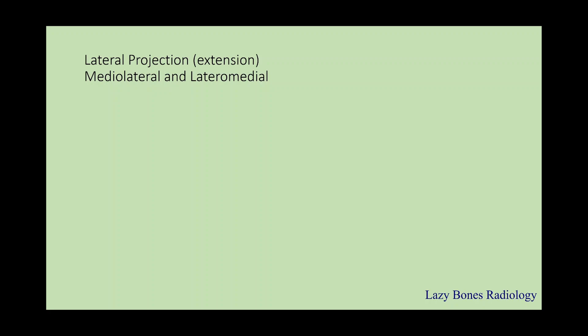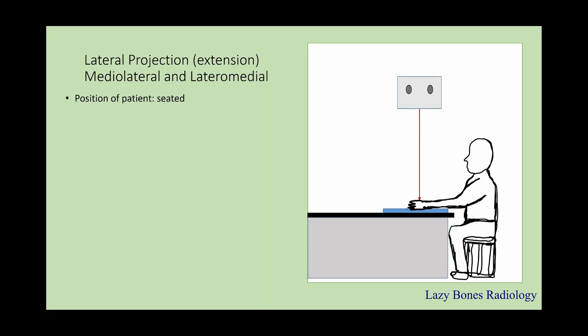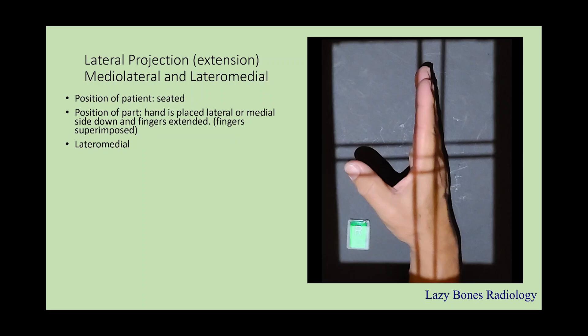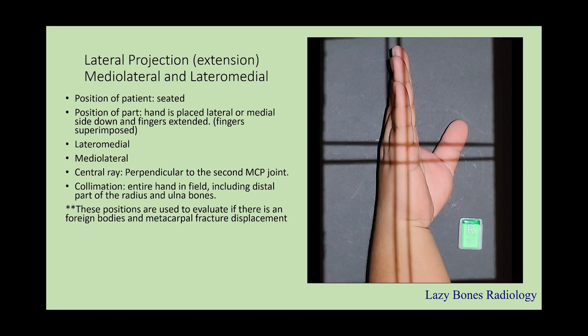Lateral projection — mediolateral and lateralmedial extension. Patient seated, as you can see here. There are two forms of positioning of the hand: with the lateral or medial side down with fingers extended, or fingers superimposed. This is a lateralmedial projection, while this is a mediolateral projection — do you see the difference? Make sure the central ray is perpendicular to the 2nd MCP joint for a lateralmedial projection, or the 5th MCP joint for a mediolateral projection. Make sure to collimate the entire hand including the distal part of the radius and ulna. This position is used to evaluate the hand for foreign bodies and to evaluate metacarpal fracture displacement. SID is 40 inches. Make sure to label correctly.